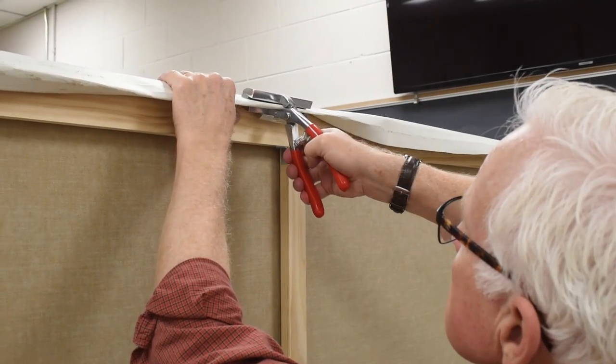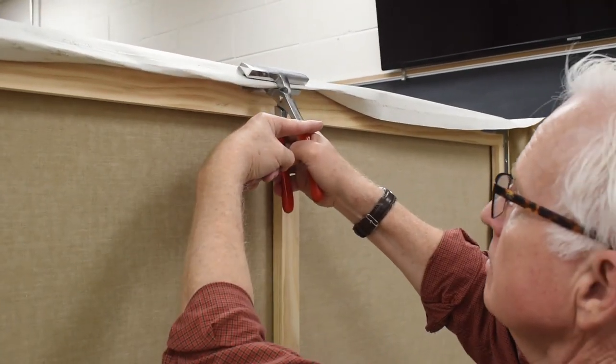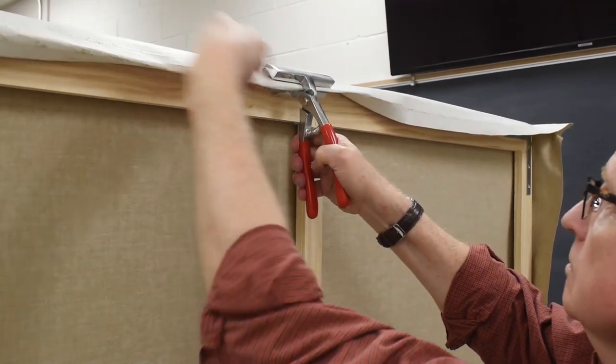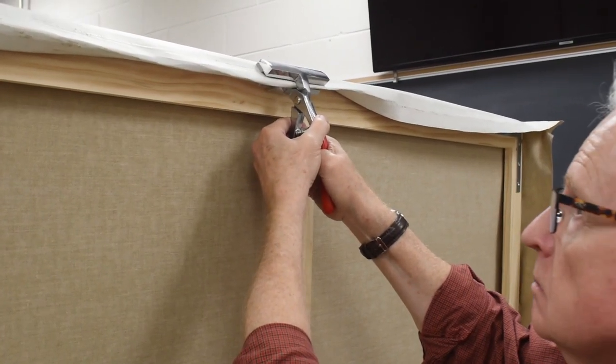So as Mr. Jekyll is pulling with the pliers he's pulling down as well as away from the center. So it's kind of a down and out motion to create this tension constantly going away from the center of the canvas.